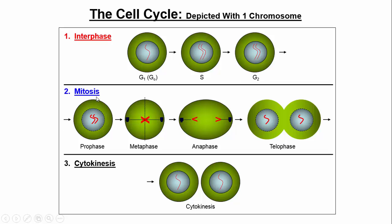The second phase of the cell cycle is mitosis, which has four phases: prophase, metaphase, anaphase, and telophase. In prophase — 'pro' in Greek means before, so it's the first phase — the DNA starts to condense. In interphase we call the DNA chromatin; once it starts condensing and becoming more compact, we call them chromosomes. So here we have one chromosome in the cell, the DNA condenses, and the nuclear membrane starts to break down.